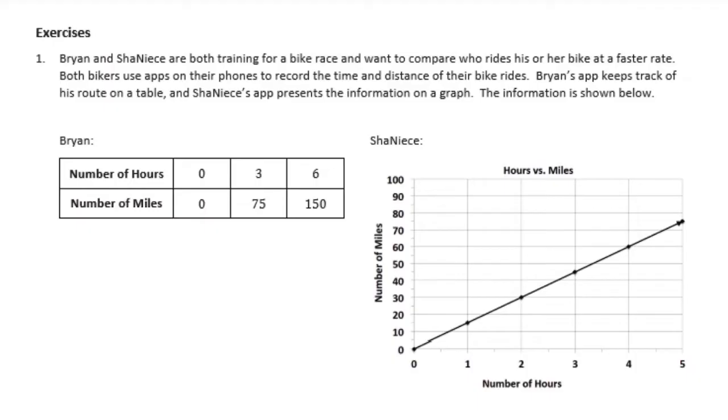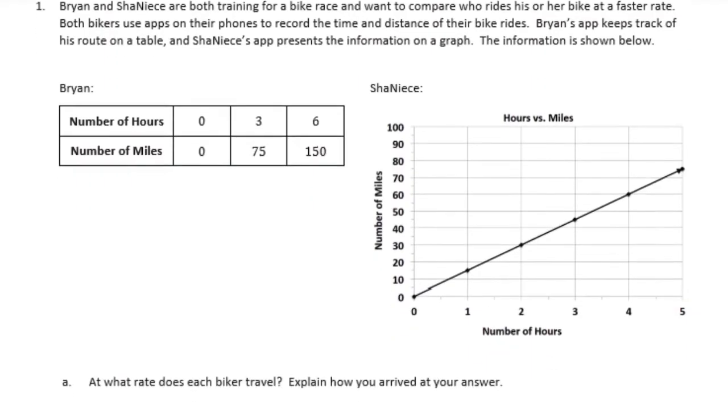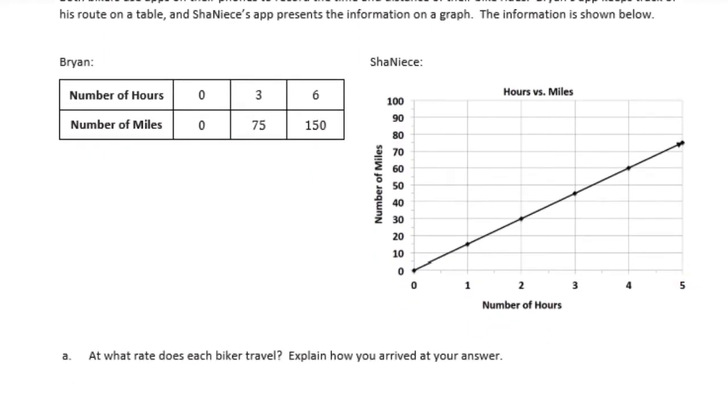Exercises. Brian and Shanice are both training for a bike race and want to compare who rides his or her bike at a faster rate. Both bikers use apps on their phones to record the time and distance of their bike rides. Brian's app keeps track of his route on a table. And Shanice's app presents the information on a graph. The information is shown below. So we have Brian in a chart and this table and Shanice's is on this graph. At what rate does each biker travel? Explain how you know how you arrived at your answer.